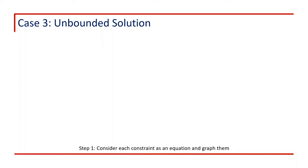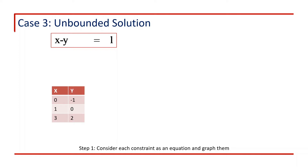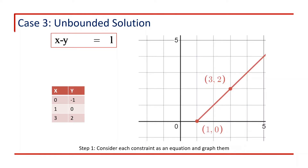Step 1 is to consider each constraint as an equation and graph them. The first constraint is x minus y less than or equal to 1, and as an equation it becomes x minus y equals 1. To draw this, we need two points. Putting x equals 0 gives y equals minus 1 — we discard this since y is negative. Putting y equals 0 gives x equals 1, so the first point is (1, 0). Putting y equals 2 gives x equals 3, so the second point is (3, 2). We draw a line connecting these two points for the first constraint.